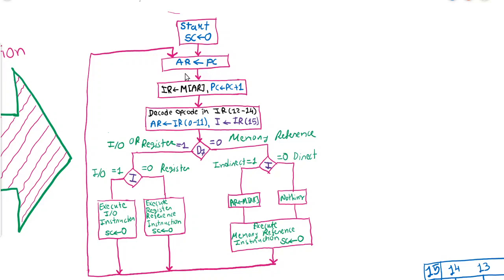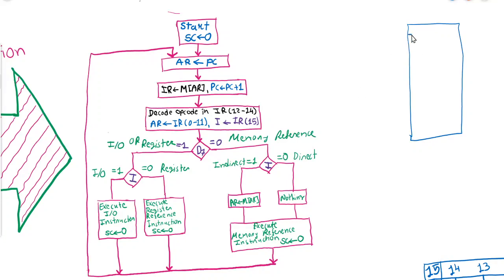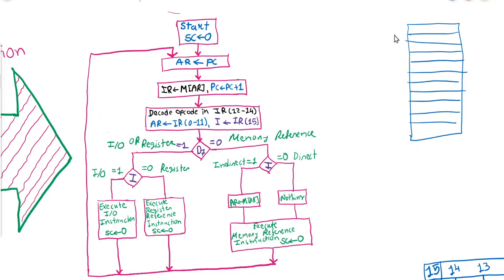Once the instruction is fetched, the starting address is already stored in the address register. Using that address, the instruction to be executed will be loaded. Let me draw a memory map so you can understand how it works. Let's say this is our memory location.